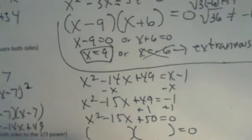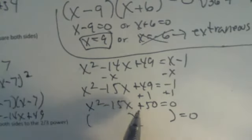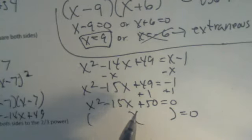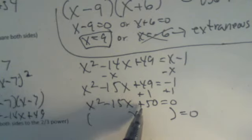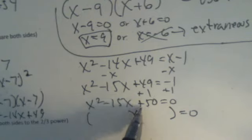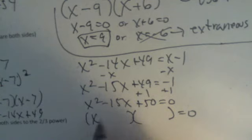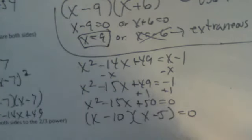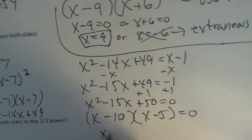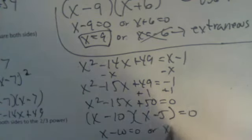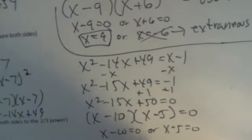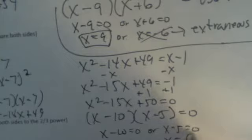So once I get that, now I'm going to factor. So thinking about what we've talked about in class, I need two numbers that multiply together to give me 50. They're both the same sign because this is positive. And then they add together to give me negative 15. So that's x minus 10 x minus 5. So my solutions using my zero product property, x minus 10 is zero or x minus 5 is zero. So x is 10 or x is 5.